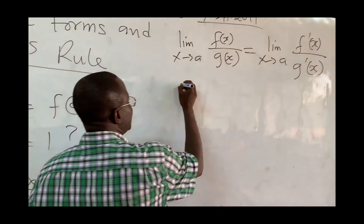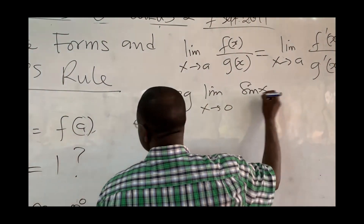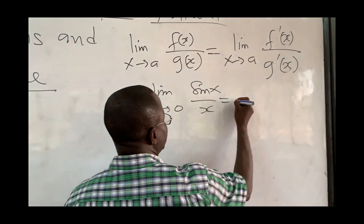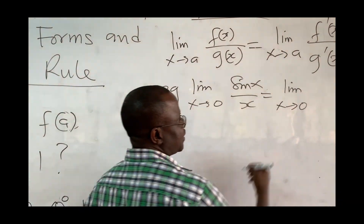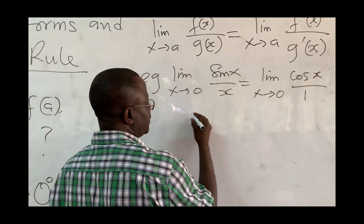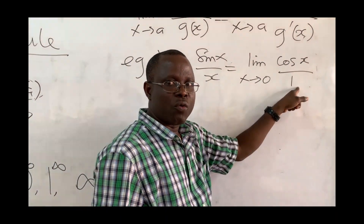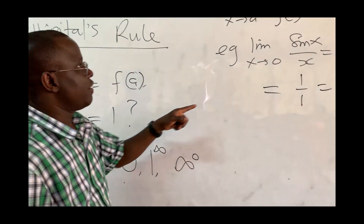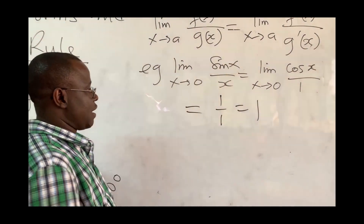We can apply this to the sin(x)/x example. We have the limit as x approaches 0 of sin(x)/x — an indeterminate 0/0 form. So we rewrite it as the limit as x approaches 0 of the derivative of sin(x), which is cos(x), over the derivative of x, which is 1. Substituting x = 0: cos(0) = 1, so we get 1/1 = 1. That is why the limit of sin(x)/x as x approaches 0 equals 1.